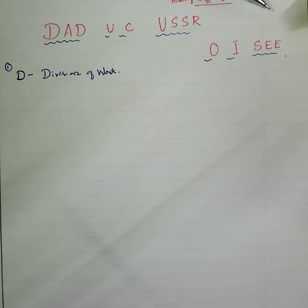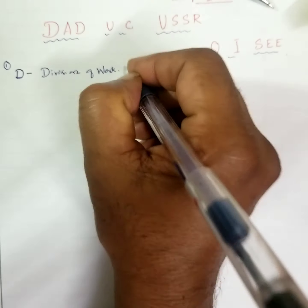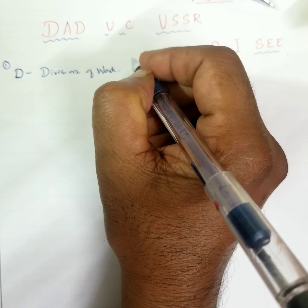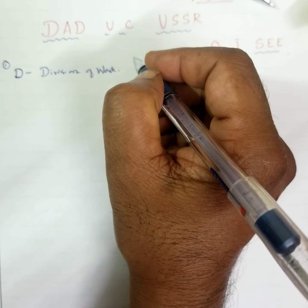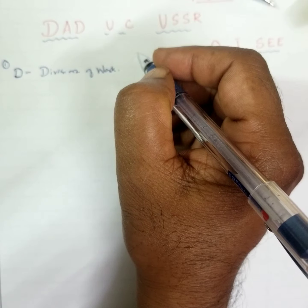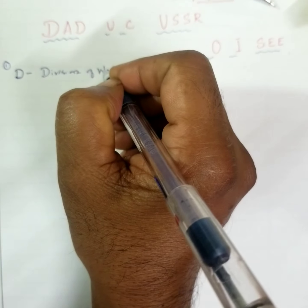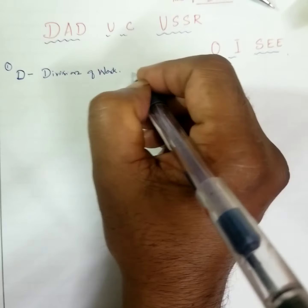Now, D stands for division of work. That is, divide any work into small jobs and should be performed by specialists so that the quality of production will be improved. Therefore work will be divided.